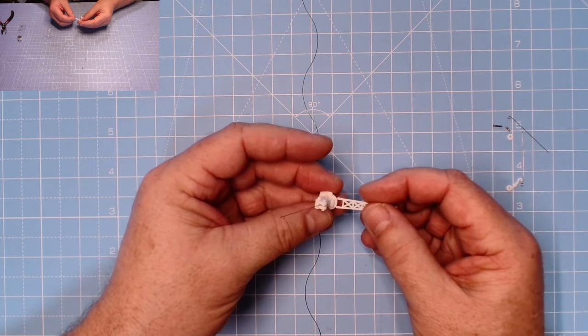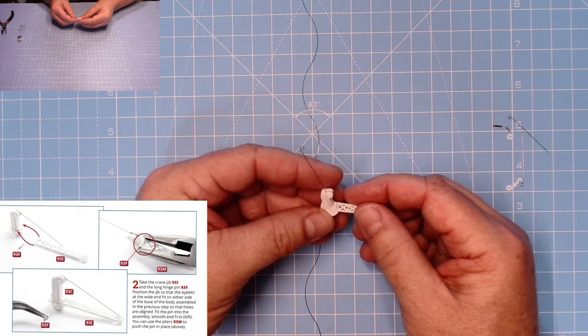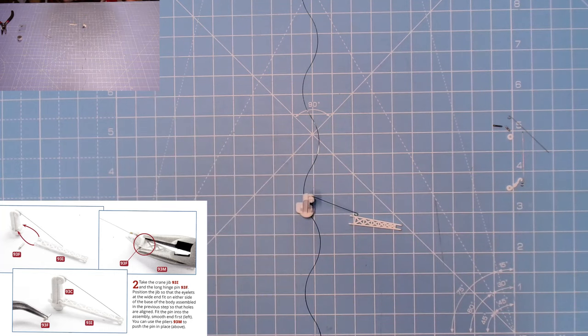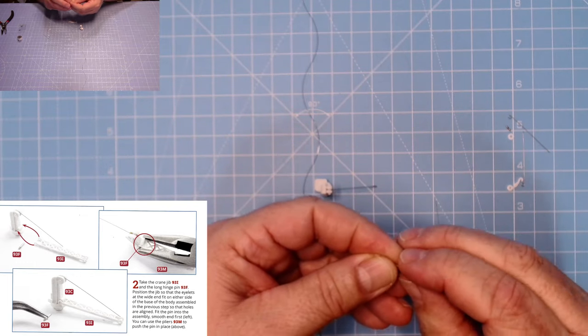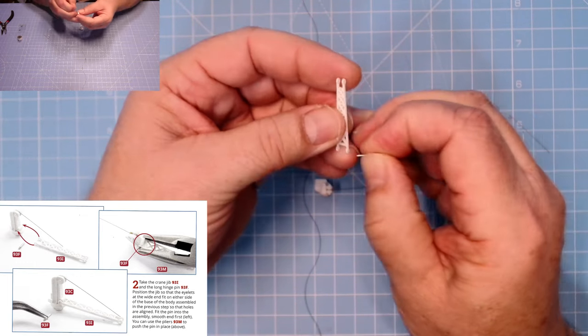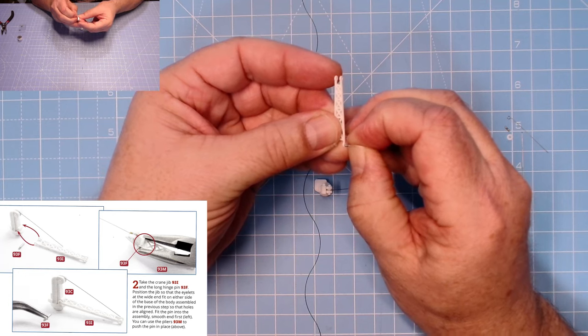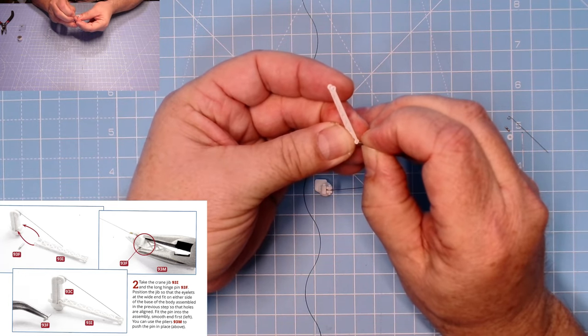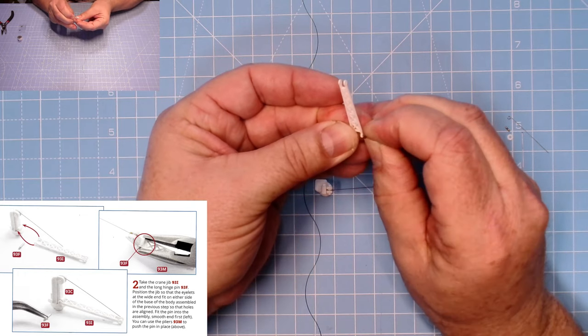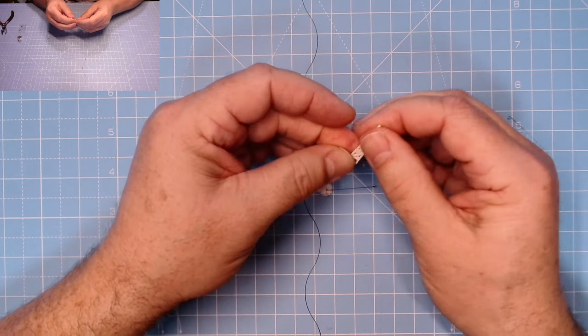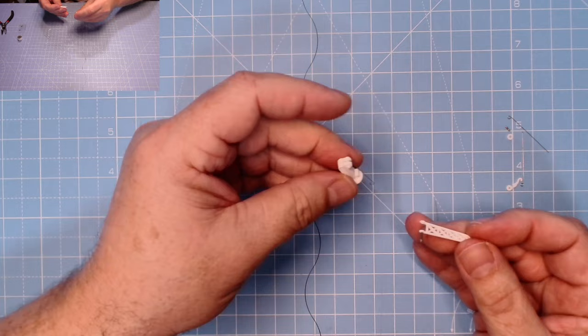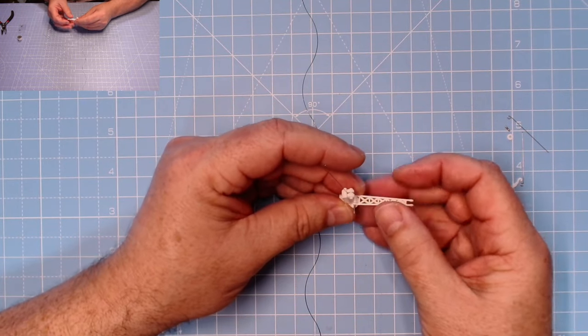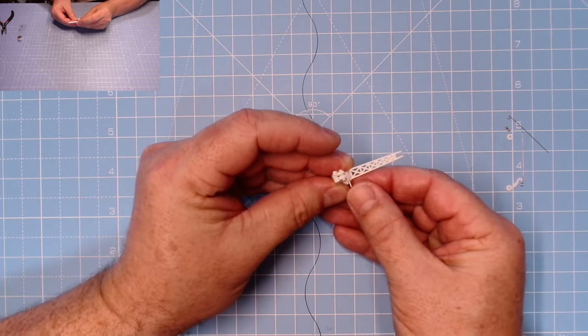That top piece there, 93E, was a little bit loose, but there we go, that's how it should be. Next we need this piece which goes just there like that, and we need to pop in the long pin to keep that in place. Okay, I've managed to pick up the pin. Now we can start by putting it through here. We'll try this first - put the smooth end in first.